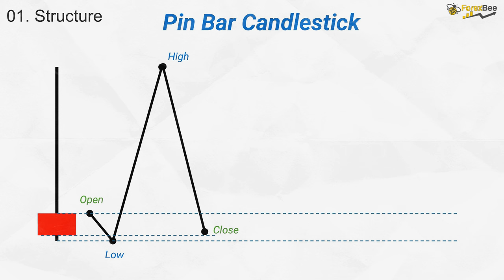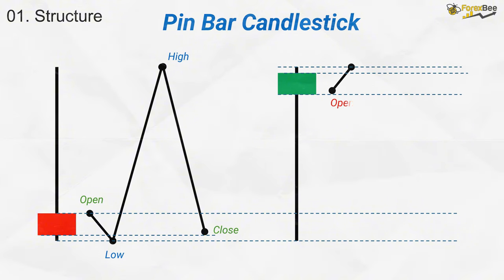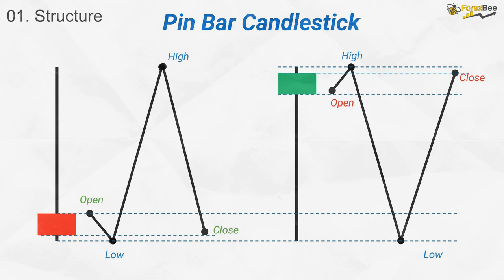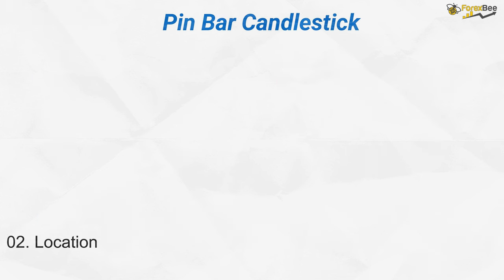In the bullish pin bar, the candle opens and the market begins to rise, making a new high. But just as the buyers seem to be in control, sellers step in and force the price down. Yet towards the close, buyers regain momentum, pushing the price back up, forming a long lower shadow and showing a rejection of lower prices by buyers, signalling potential upward movement.